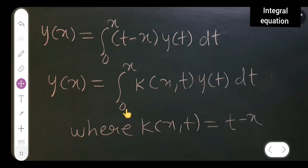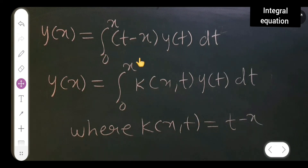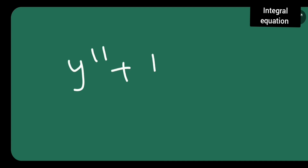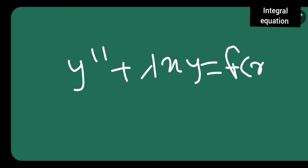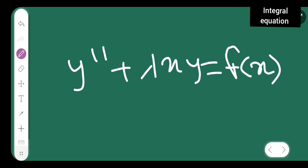Therefore, y(x) equals the integral from 0 to x of k(x, t) times y(t) dt, where the kernel k(x, t) = t minus x. This is the Volterra integral equation form. That concludes today's lecture. In the next lecture, I will convert another initial value problem — y'' + λx·y = f(x) — into a Volterra integral equation. If you haven't understood any concept, please comment below. Thanks for watching.